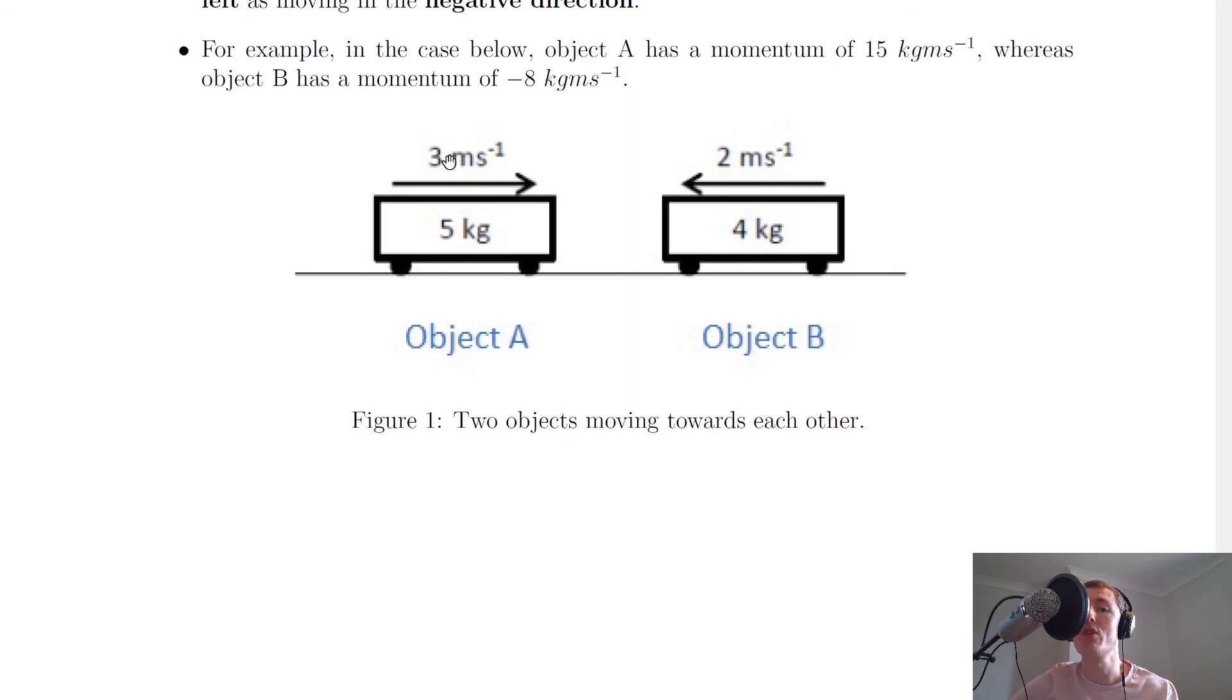So here we have a positive velocity, and here we have a negative velocity. So therefore our overall momentum here is positive, and our overall momentum here is negative.